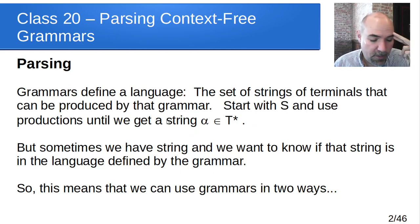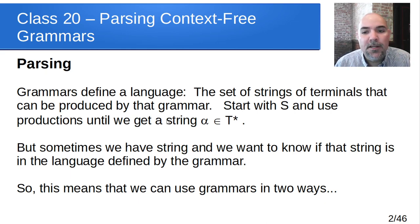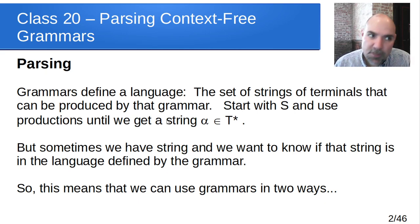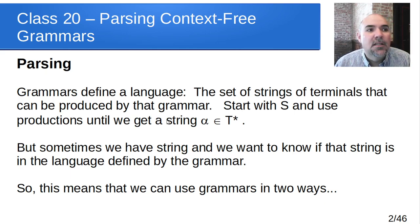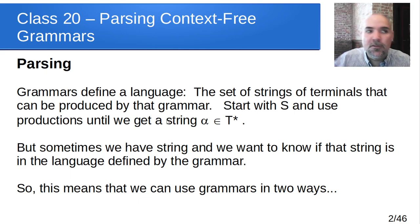Let's start with what a grammar is. A grammar is a way of defining a language, and that language is defined as the set of strings of only terminals that can be produced by that grammar. If you start with the start production and use valid productions in the grammar to get some string that's in T-star — just terminals — then you have a string that's in that language. The set of all such strings is the language defined by the grammar.